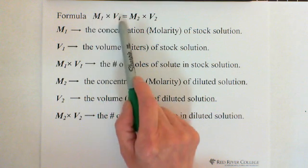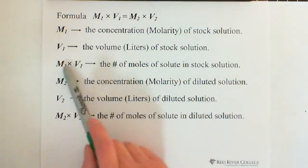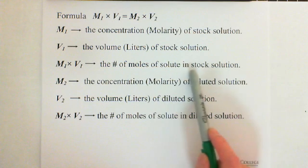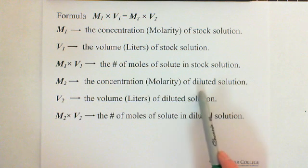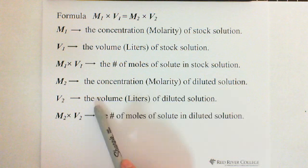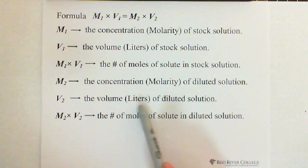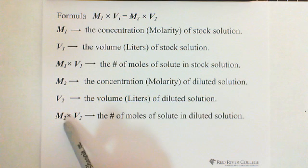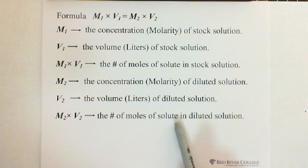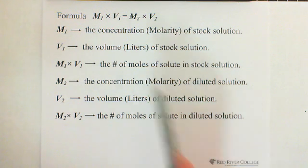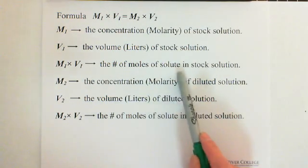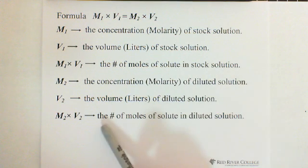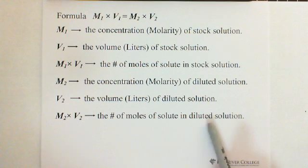So M1 multiplied by V1 represents the number of moles of solute in the stock solution. M2 is the concentration — molarity of the diluted solution — and V2 is the volume in liters of the diluted solution. So M2 multiplied by V2 represents the number of moles of solute in the diluted solution. Setting them equal means the moles of solute in the stock solution equal the moles of solute in the diluted solution.